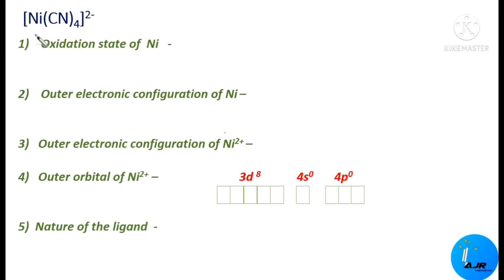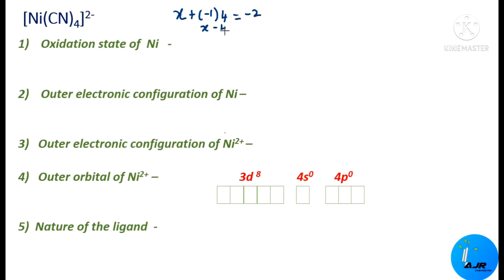Now check the next complex: Ni(CN)₄²⁻. Here also, we find the oxidation state of nickel. Taking it as X: the charge on CN⁻ is −1, and there are 4 ligands, giving an overall charge of −2. So X − 4 = −2, and after simplifying, X = +2. The oxidation state of Ni is +2, so this also exists as Ni²⁺.